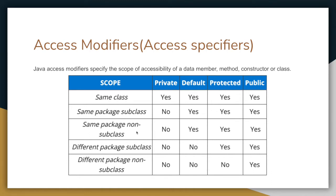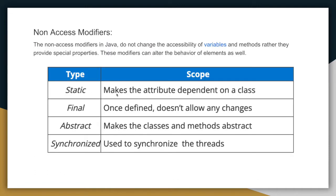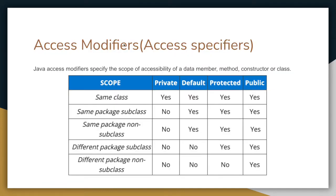Protected is like within apartments — only houses in the same apartment complex, like a shared auditorium, are allowed to use it. Public is available everywhere, like publicly available drinking water. Protected can be accessed from different packages but only by subclasses. Default can be accessed only within the same package. Private is only used within the same class. Access modifiers are also called access specifiers.